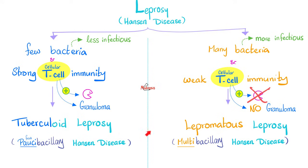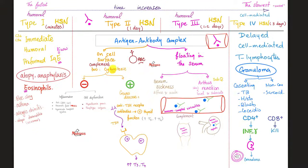Between tuberculoid and lepromatous leprosy, which one is more infectious? Since lepromatous leprosy has more bacteria, it is more infectious. Tuberculoid leprosy has the granuloma. Speaking of granuloma, what kind of hypersensitivity is this? It's type 4 hypersensitivity reaction — it is delayed, takes two to three days. I need to activate my T-lymphocytes, then they secrete interferon gamma to activate the macrophages to become epithelioid cells to surround the mycobacterium leprae and make a granuloma.